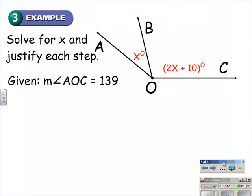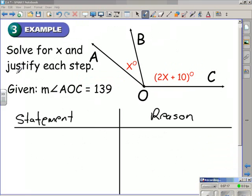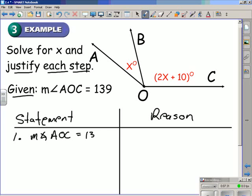Example 3, we're given a diagram already. It says solve for x and justify each step. And we're given that the measure of angle AOC is equal to 139. The statement that we start off with would be the given and that would be the measure of angle AOC is equal to 139. The justification or the reason for that is given. That's what we are told.